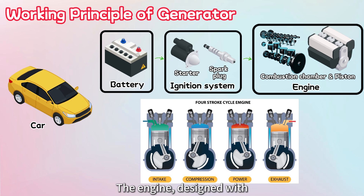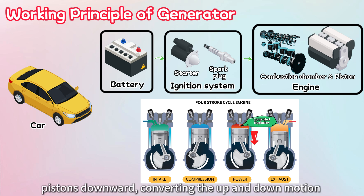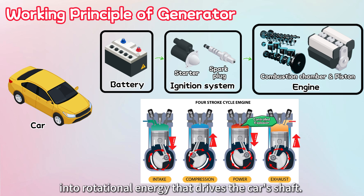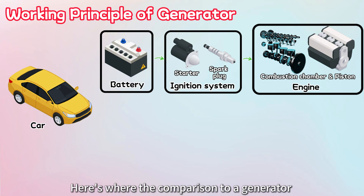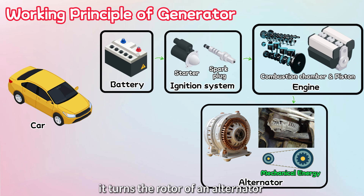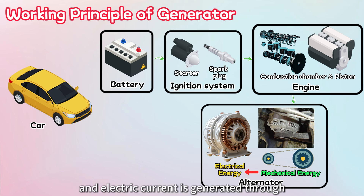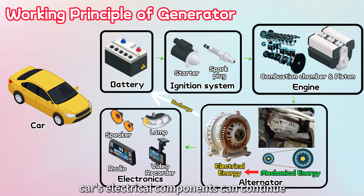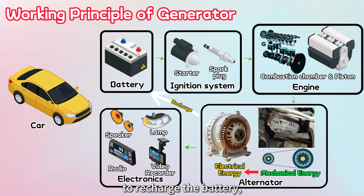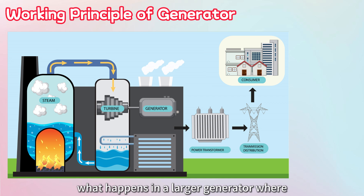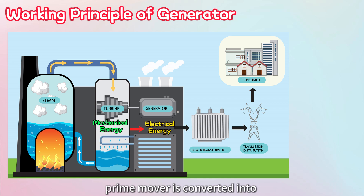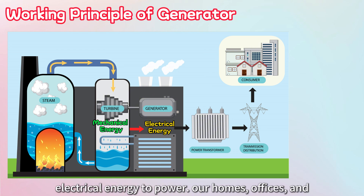The engine, designed with several combustion chambers each containing a piston, experiences a controlled explosion. This pushes the pistons downward, converting the up-and-down motion into rotational energy that drives the car's shaft. As the engine runs, it turns the rotor of an alternator connected to the shaft. In the alternator, the rotating magnetic field cuts the stator windings, and electric current is generated through electromagnetic induction. This is why a car's electrical components can continue to work when the engine is running — the alternator converts mechanical energy into electrical energy to recharge the battery and run the car's electronics. The car's alternator is a small-scale version of what happens in a larger generator, where mechanical energy from an engine or prime mover is converted into electrical energy to power homes, offices, and entire industries.